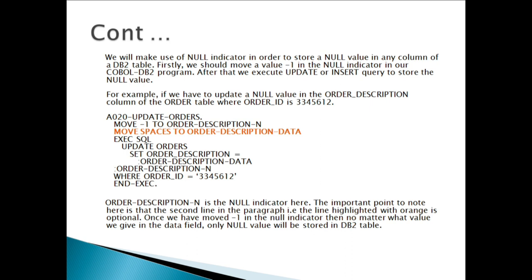First, move a value of -1 into the null indicator in our COBOL DB2 program. After that, execute an UPDATE or INSERT query to store the null value. For example, if we have to update a null value in the ORDER_DESCRIPTION column of the order table where ORDER_ID is 3334561_2, we write a paragraph as shown below. Please go through it and understand clearly.